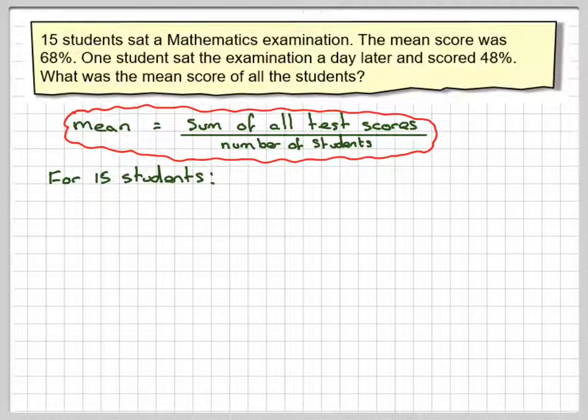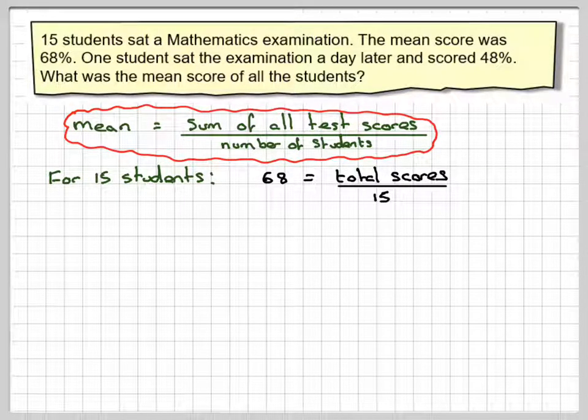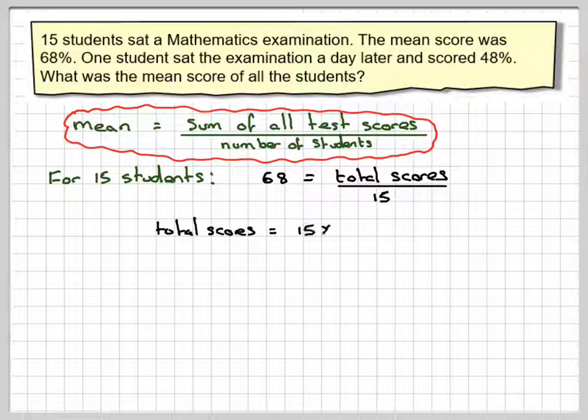So the mean score was 68, and that would be equal to the total scores that they add up to divided by 15. So if we find the total scores, we can do that by doing 15 times 68. So the total scores will be 15 times 68. That gives me 1020.